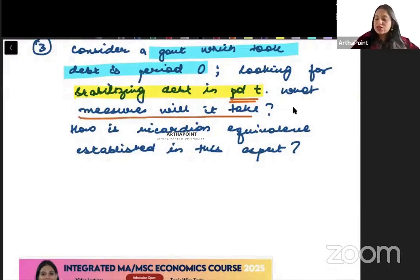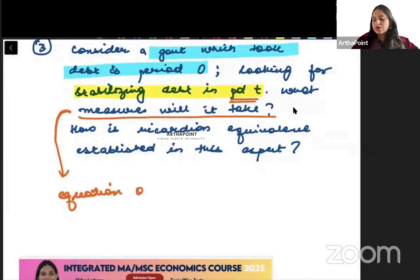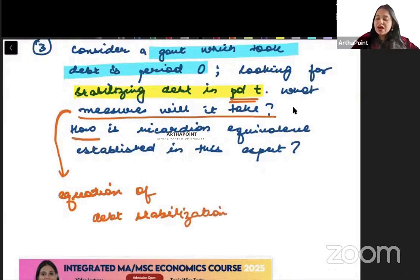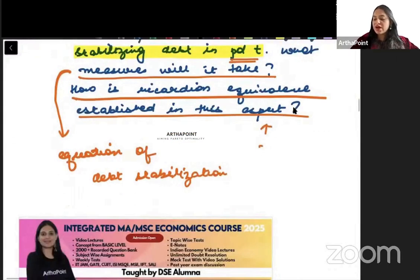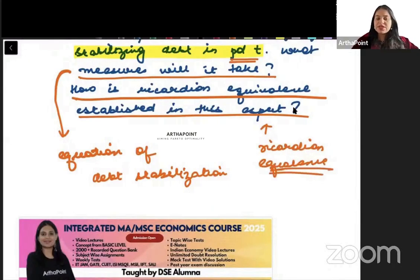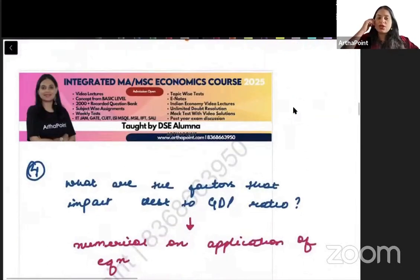So question is what measures will it take? Maane you need to explain the equation of debt stabilization. Wo equation ko aap explain karoge. Right? Then it says how is Ricardian equivalence established in this aspect? Which means you have to explain Ricardian equivalence then? And tell what Ricardian equivalence tells. Kya Ricardian equivalence kya bolta hai? Wo explain karne ki koshish karne hai.